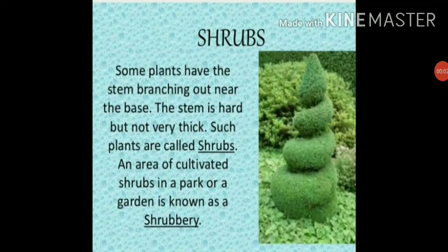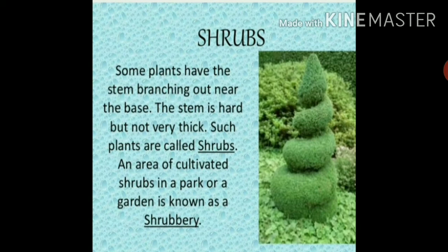Shrubs are bushy plants — 'bushy' means growing thickly. They are medium-sized plants, generally between 1 to 3 meters in height. Shrubs have thin branches starting from just above the ground, meaning they branch near the ground. Their stem is hard but not so thick.